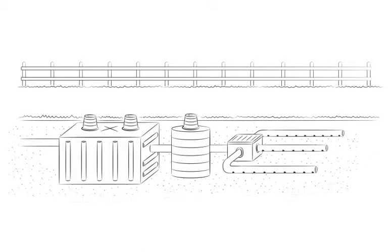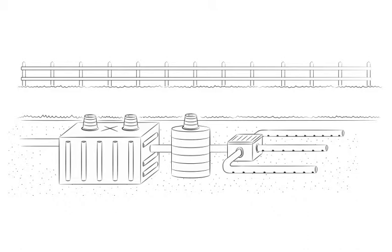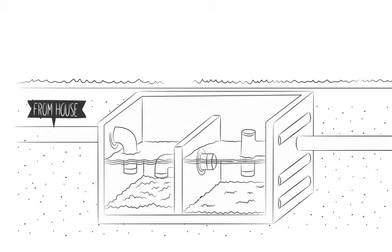We'll use a basic Type I system going forward. Wastewater from all drains in the home – sinks, tubs, showers, laundry, and toilets – all flow into the septic tank.